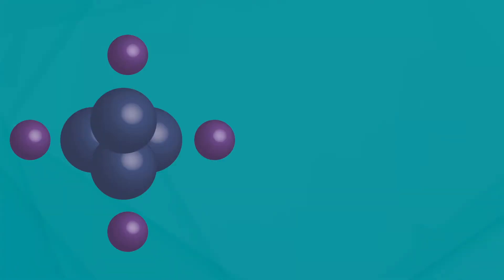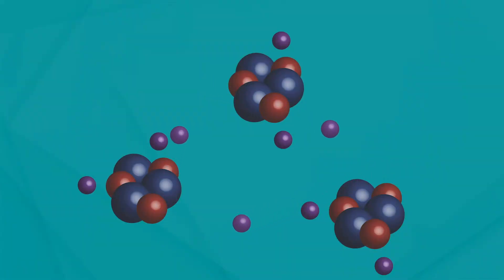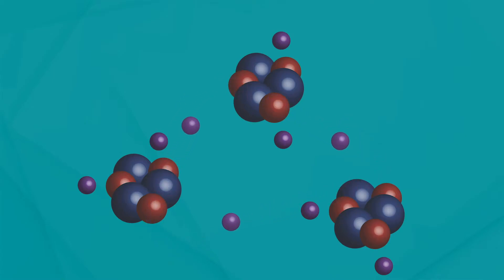Atoms like to be balanced. That means they want to have an equal number of protons and electrons. So when an electron leaves an atom and moves to another atom, one atom will be short an electron and the other atom will have an extra. This causes a chain reaction where electrons move from atom to atom trying to balance out all of the atoms. Moving a magnet inside a coil of wire causes electrons to move from atom to atom in a flow. This flow of electrons through wire is called an electrical current and is how we create electricity.